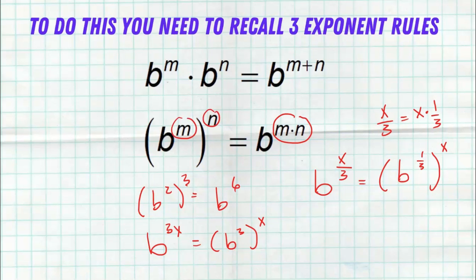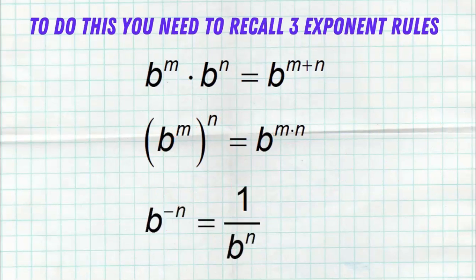The last rule you need to remember is what a negative exponent does. A negative exponent simply moves you to the denominator where you become a positive exponent: b to the negative n is 1 over b to the n. For example, b to the negative 3 is 1 over b to the positive 3. Negative exponents do not make you negative — they just typically make you smaller. Now let's use these rules to manipulate exponential functions into the form a times b to the x.